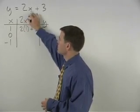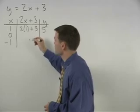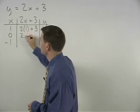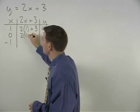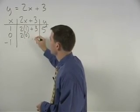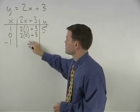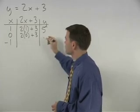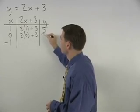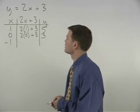Plugging a 0 into the equation for x, we have 2 times 0 plus 3, which is 0 plus 3, or 3.